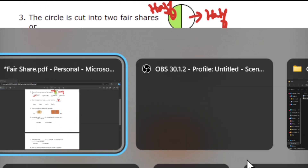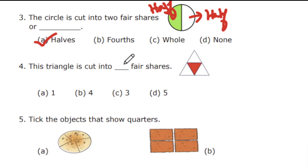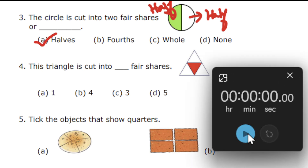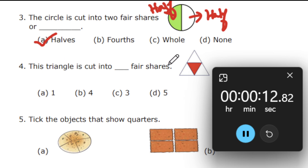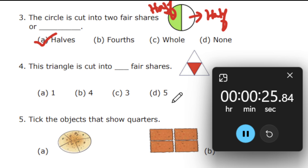Fourth question: this triangle is cut into dash fair shares. The options are one, four, three, or five.